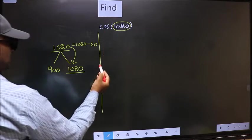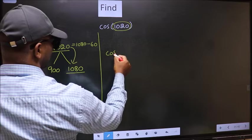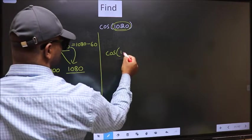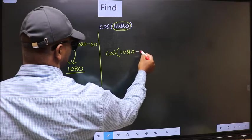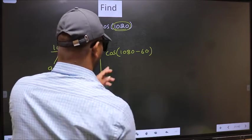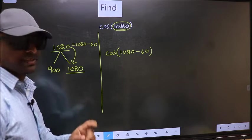So this will become cos. In place of this, we write 1080-60. This is your step 1.